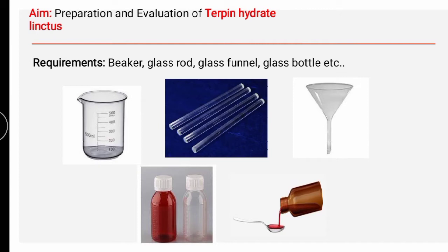Now we are supposed to prepare a linctus from that active — terpene hydrate. Linctus is a monophasic liquid dosage form. According to the definition, linctuses are monophasic liquid dosage forms which are viscous in nature and contain one or more active ingredients dissolved in a vehicle that usually contains a high proportion of sucrose or other sugars, or suitable co-solvents like alcohols or polyhydric alcohols.